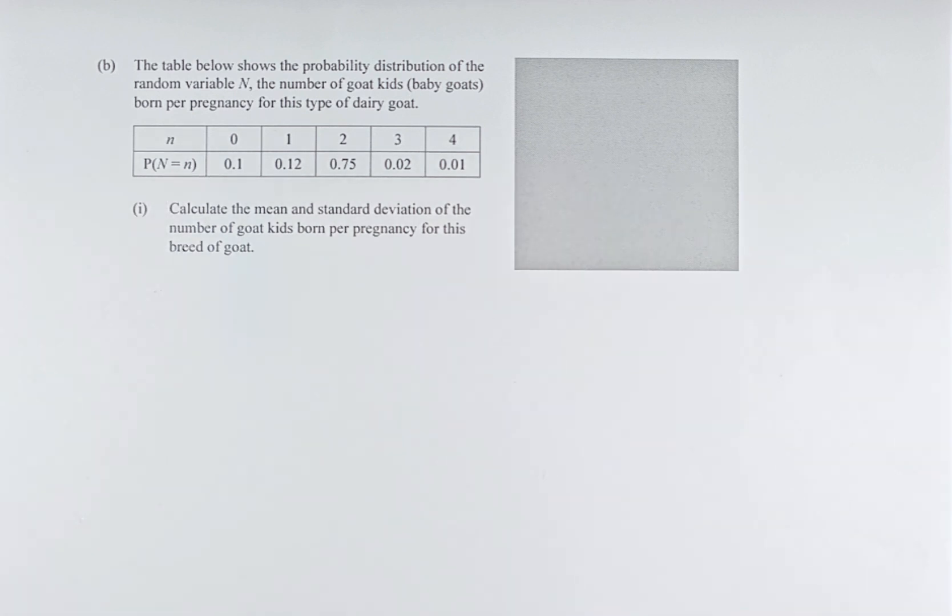So the probability must add up to one. Calculate the mean and standard deviation of the number of goat kids born per pregnancy for this kind of breed of goat.